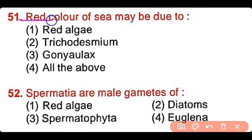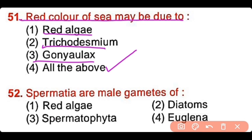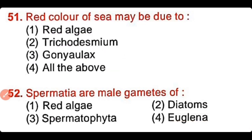Question number 51: Red color of sea may be due to red algae, Trichodesmium, Gonyaulax, or all of the above? The correct answer is option 4. Red color of the sea may be due to red algae, Trichodesmium, and Gonyaulax as well.